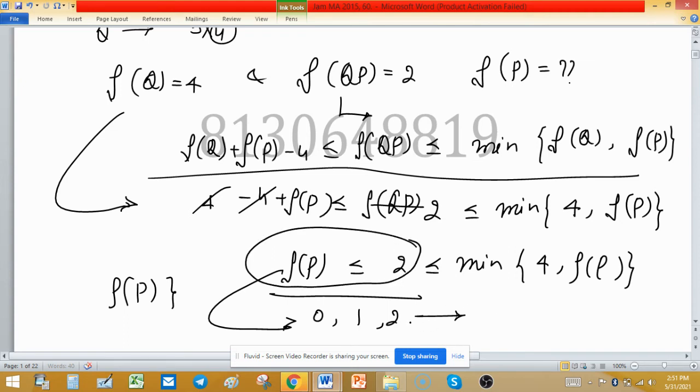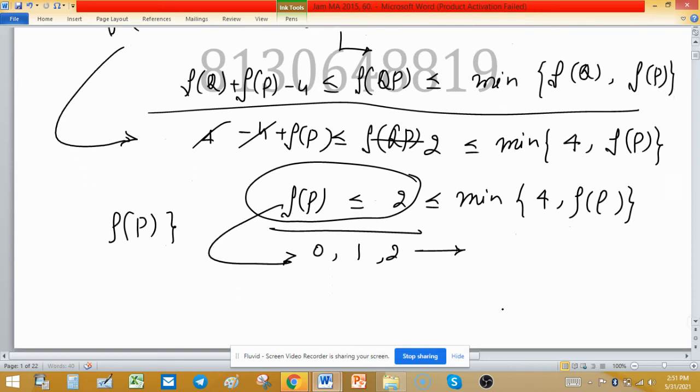So 0, 1, and 2. If we first consider rank of P is 0, then the product rank may not be 2 as given, so 0 is not possible.